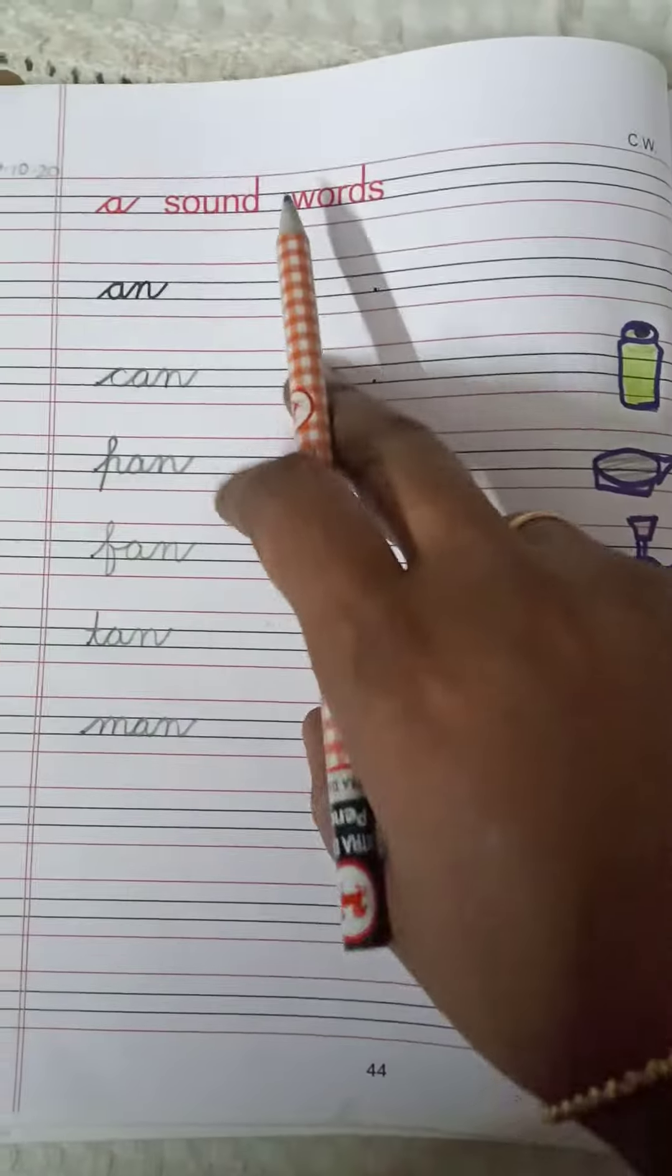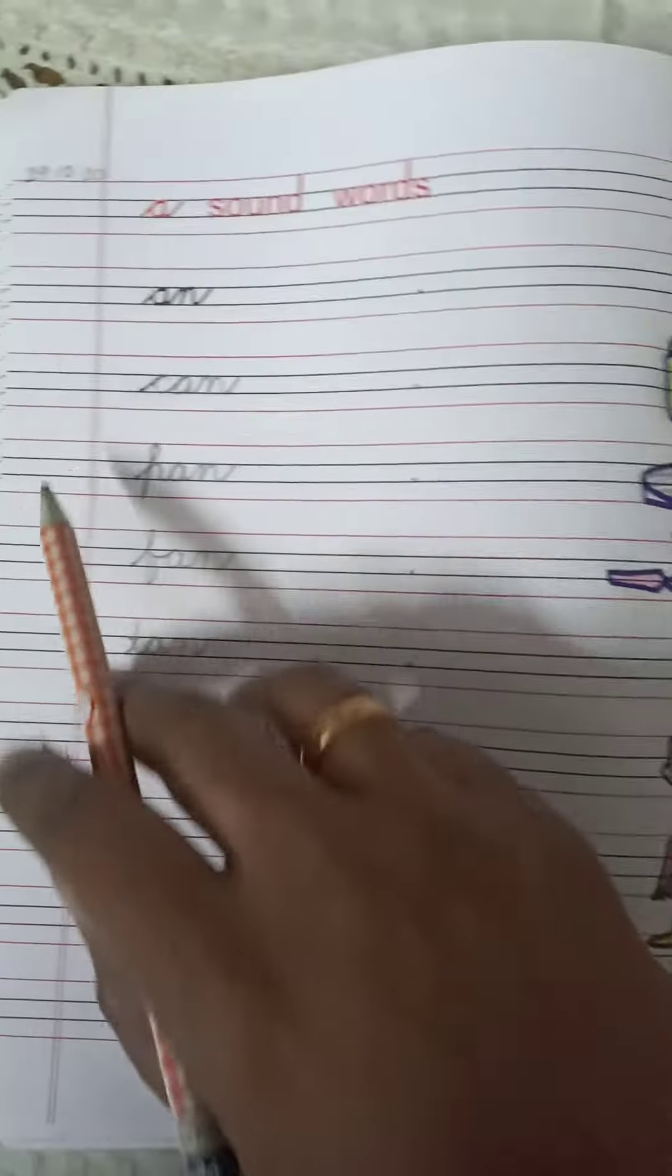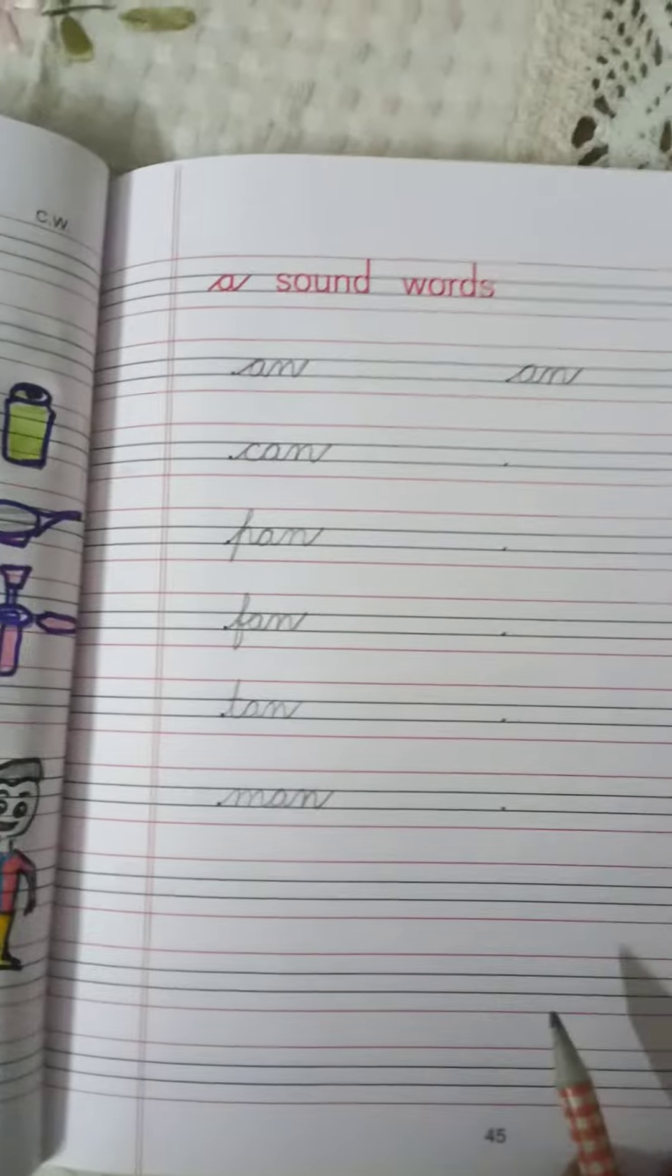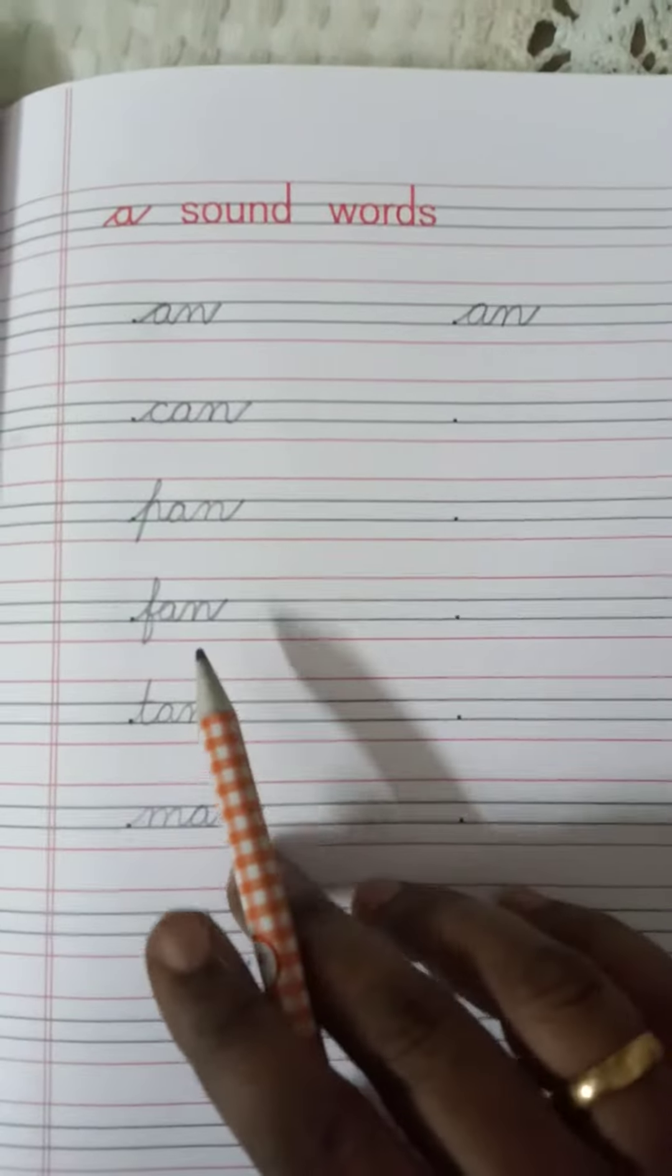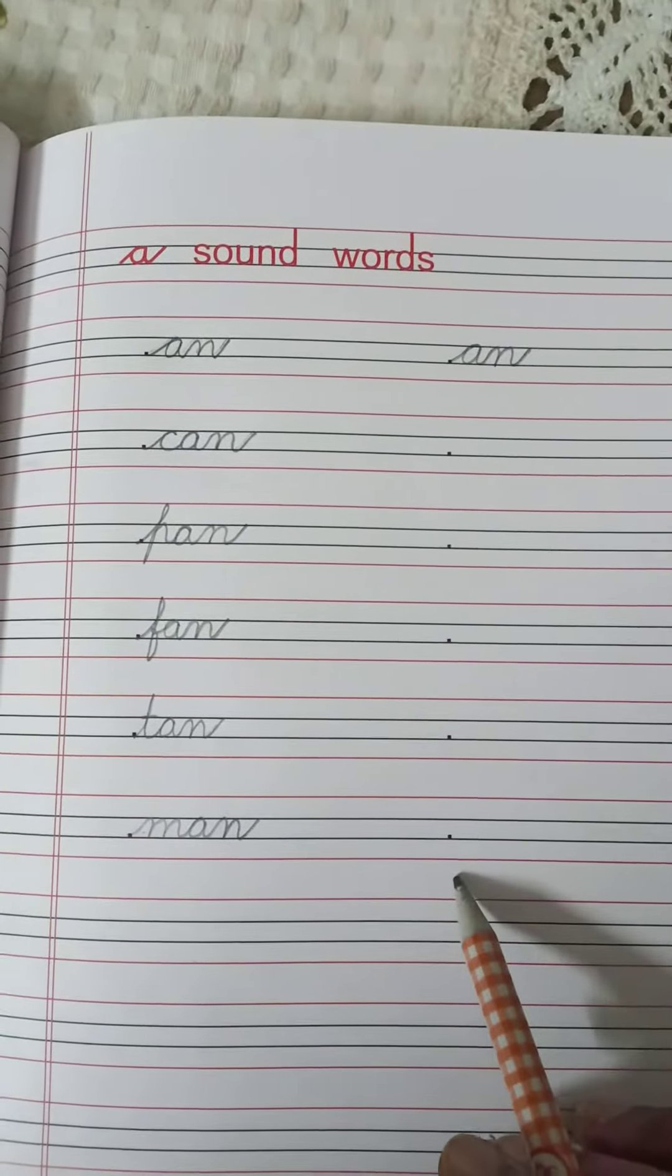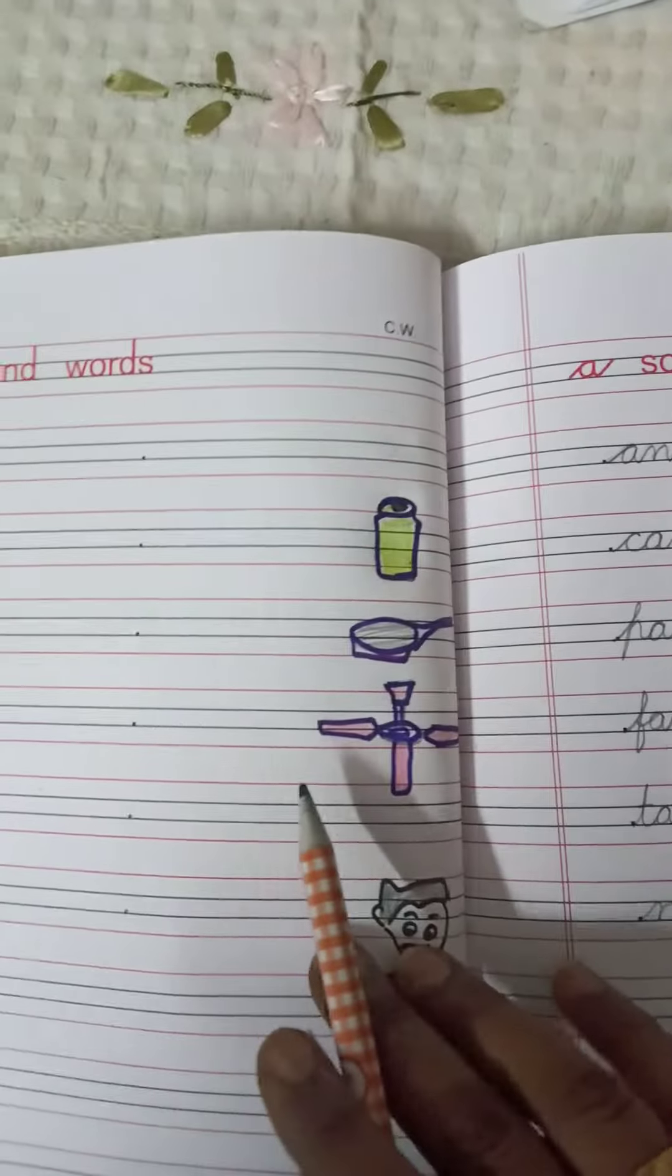So write down these five words children, here write down numbering also. And please repeat it here at page number 45. So page number 44 and 45, you have to complete them. Try to make these drawings, these simple drawings.